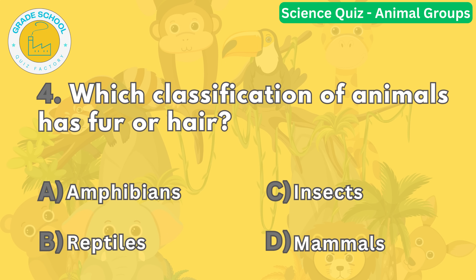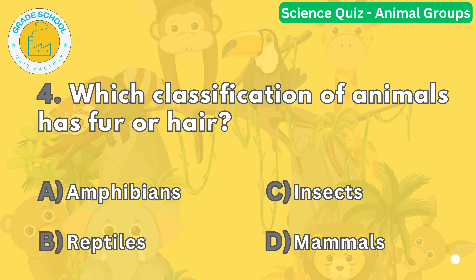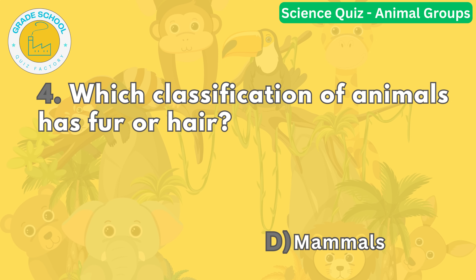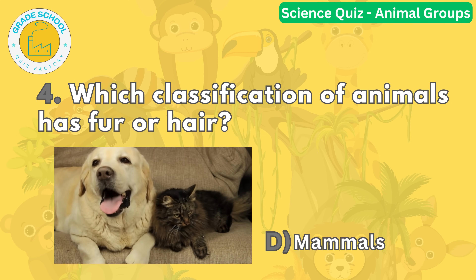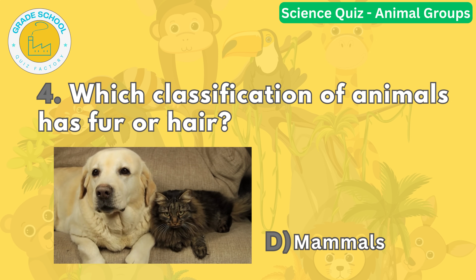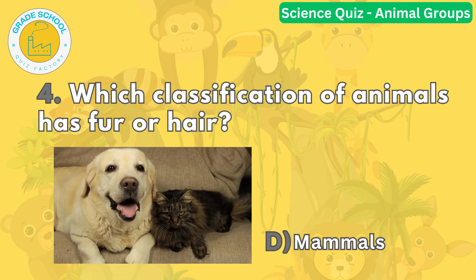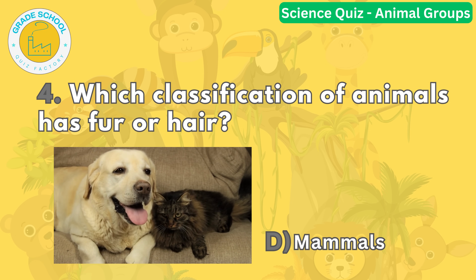Question number four. Which classification of animals has fur or hair? The correct answer is letter D. Mammals, including cats, dogs, and whales, have fur or hair that helps them stay warm and provides protection. Humans are mammals, too.